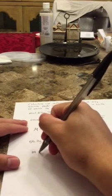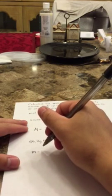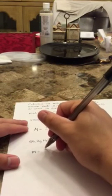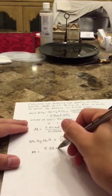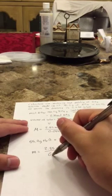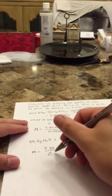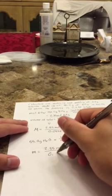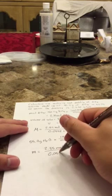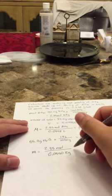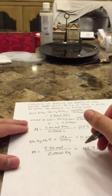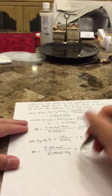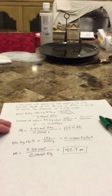And then all we have to do now is calculate molality, which is moles of solute over mass of solvent. So that's going to be 2.35 moles over 0.0550 kg. And we get a molality of 42.7 mol. And we can go ahead and square that. And that's how you find molality and molarity.